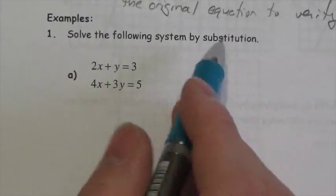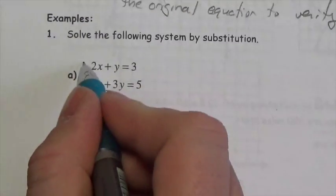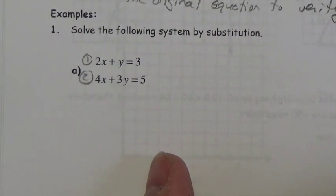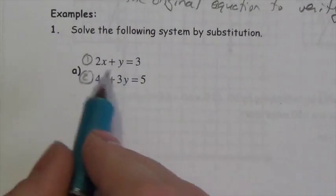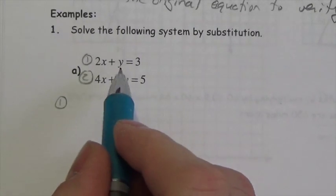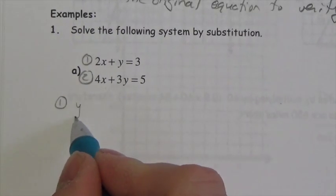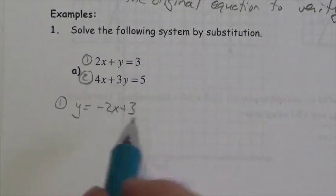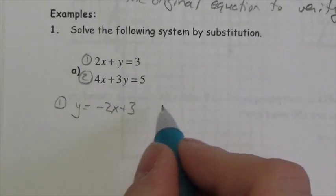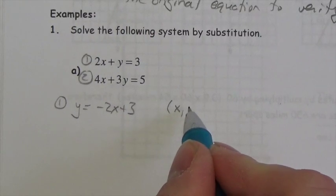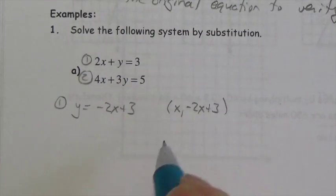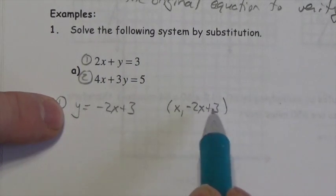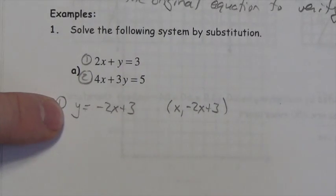Solve the following system of equations by substitution. This is equation one and this is equation two. I'm going to look for the easiest relationship to establish — in this case, taking equation one and isolating y, because the coefficient of y is one. So y is going to equal negative 2x plus 3. This tells me that every point on this line has the coordinates x comma negative 2x plus 3, because this is exactly what y equals.